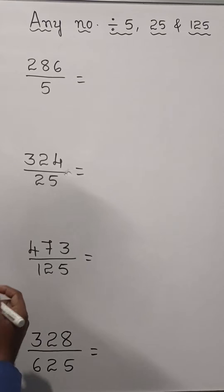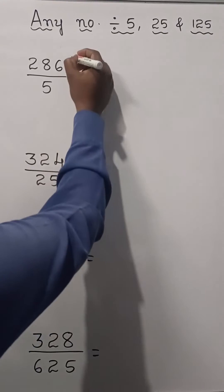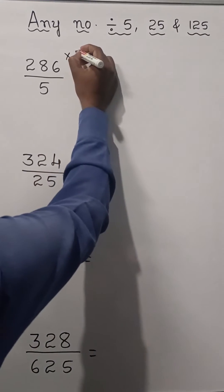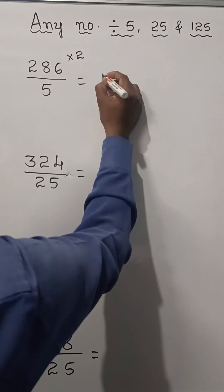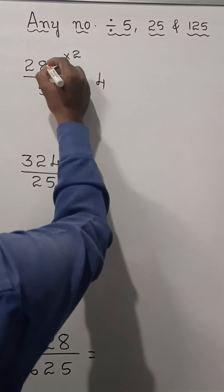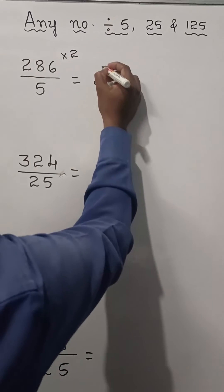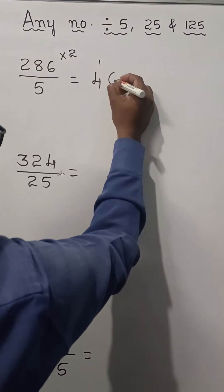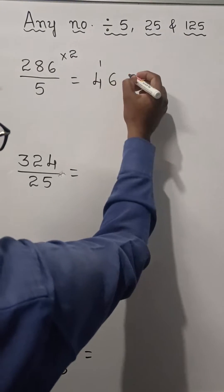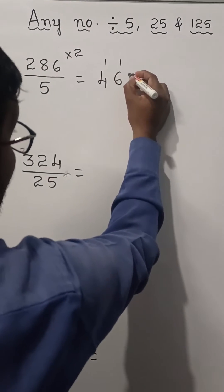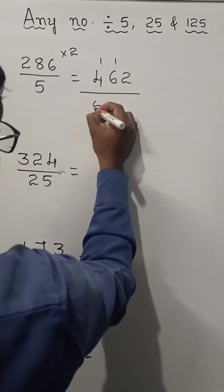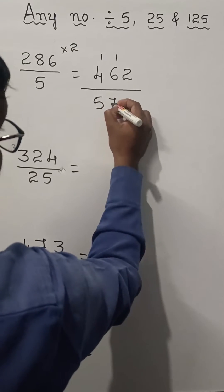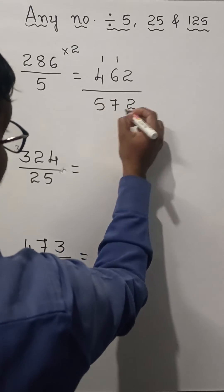286 divided by 5 means first multiply the number by 2. 2 times 2 is 4. 2 times 8 is 16 — write 6, carry 1. 2 times 6 is 12. Now the answer for this is 572.